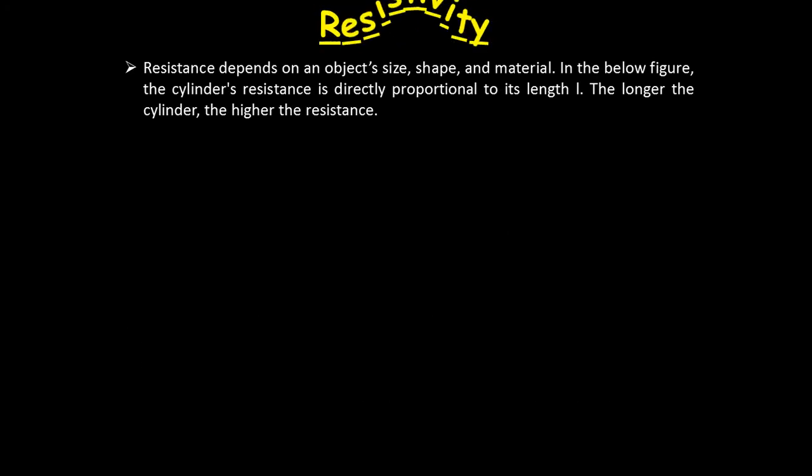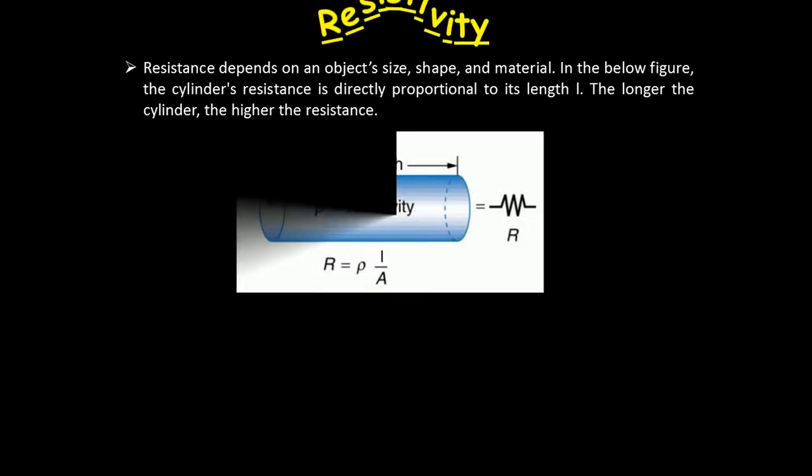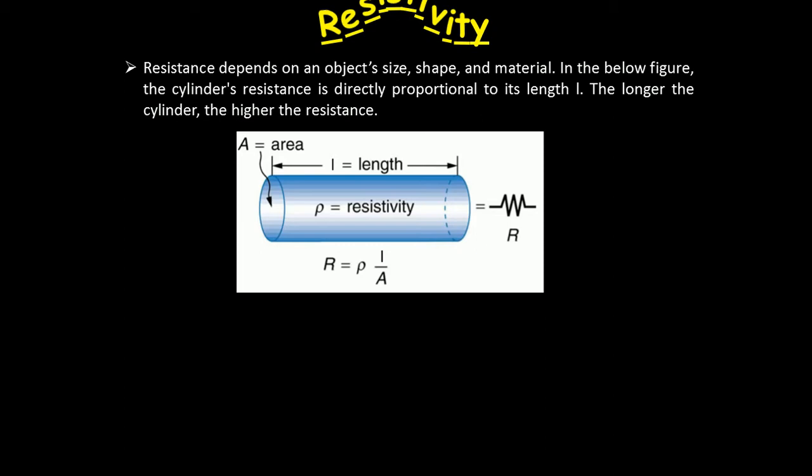The second term is resistivity. Resistance depends on an object's size, shape, and material. In the below figure, the cylinder's resistance is directly proportional to its length L. The longer the cylinder, the higher the resistance.